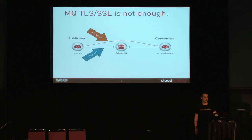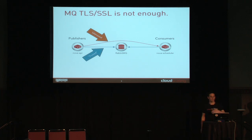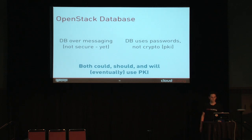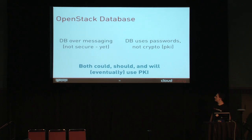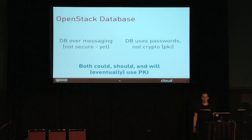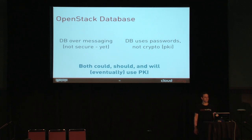You can't just secure that with TLS or SSL because that only gives you security to Rabbit — it's still untrusted over the network, and you potentially have man-in-the-middle attacks in RabbitMQ itself. Some of our database access is actually done over messaging, which we just evaluated is not yet secure. The database uses passwords with no PKI. MySQL and Postgres both support certificates and PKI, but we don't use it. There's no capability in OpenStack to use that — they could, should, and will hopefully use PKI eventually.